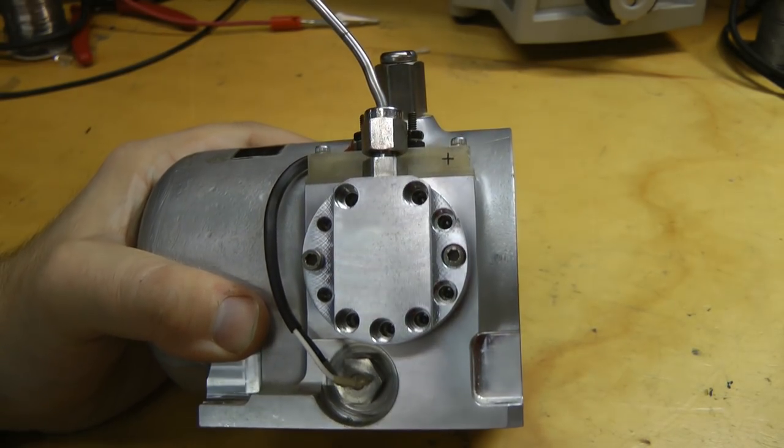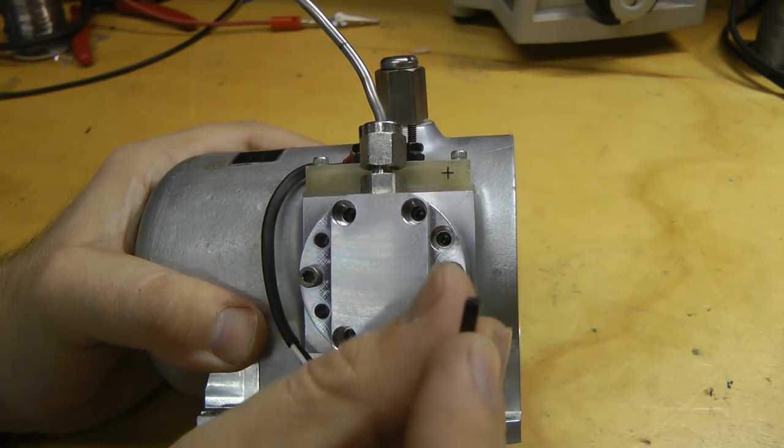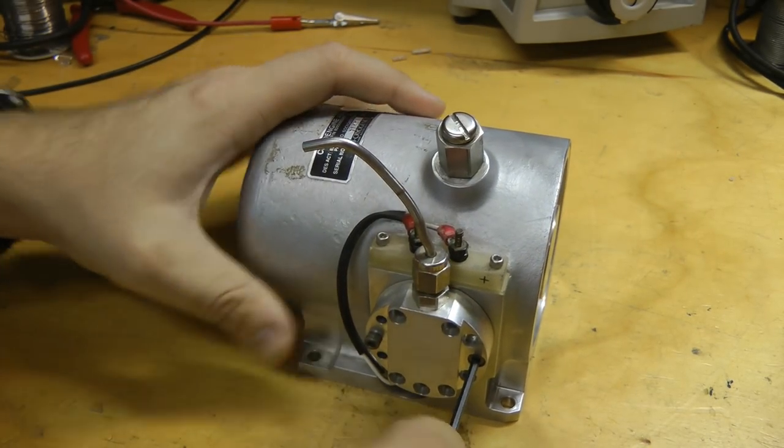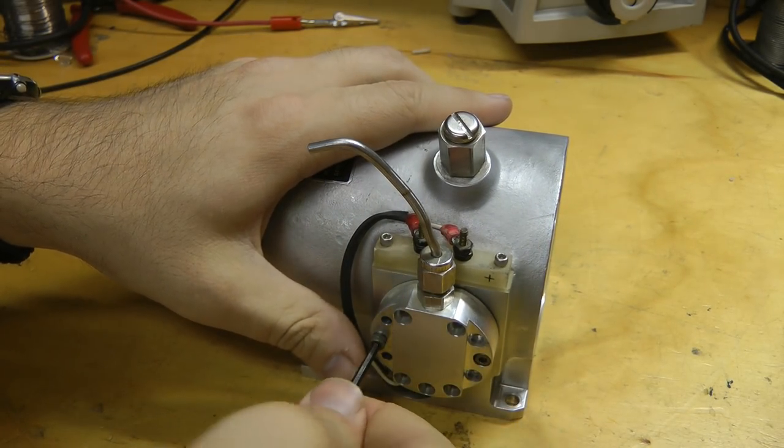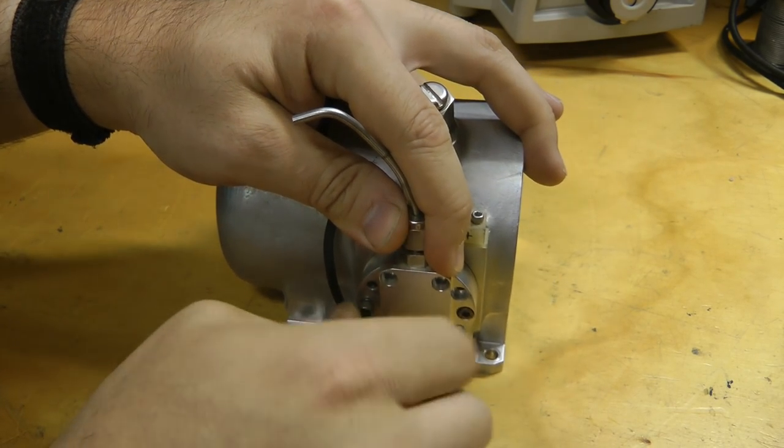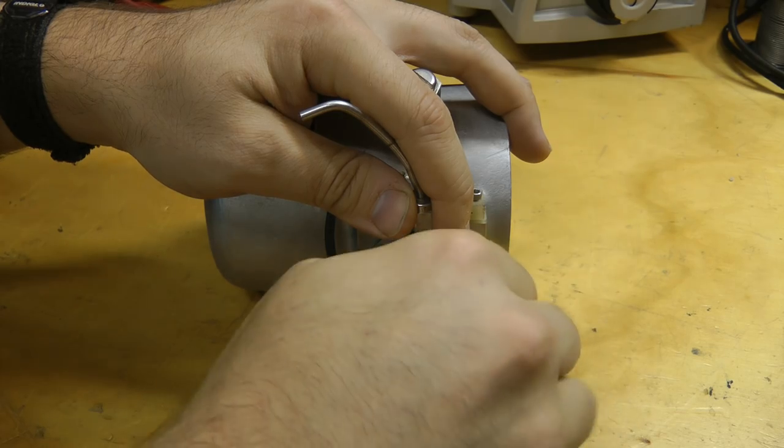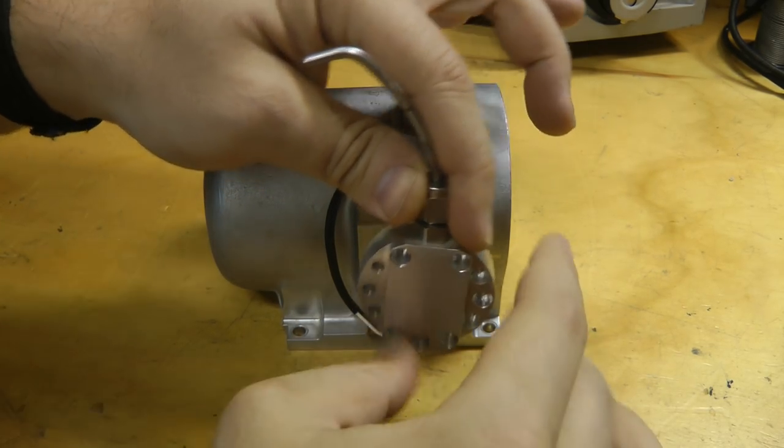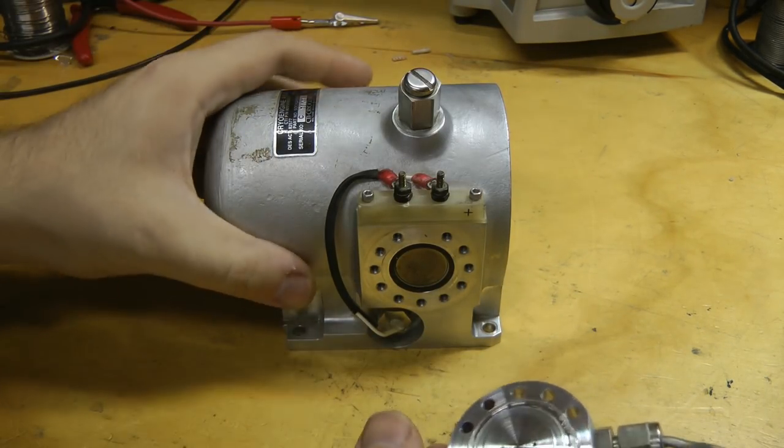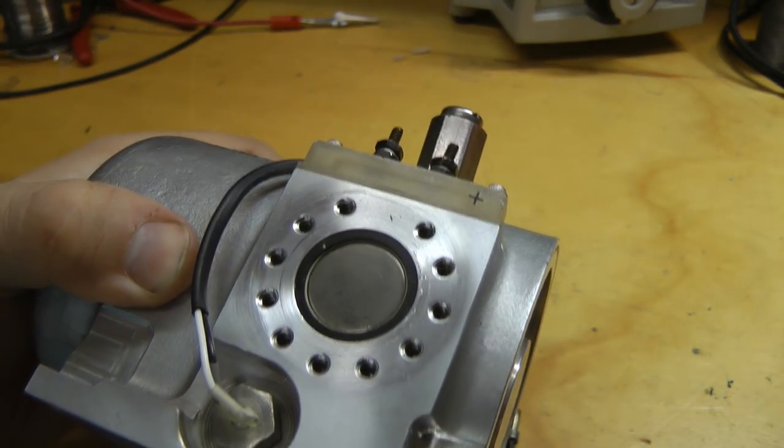Looks like someone may have already been in this before, because most of the screws are missing. So, let's see what we actually find here. These are not particularly tight. There we go. Oh yeah, that looks like a piston in there.